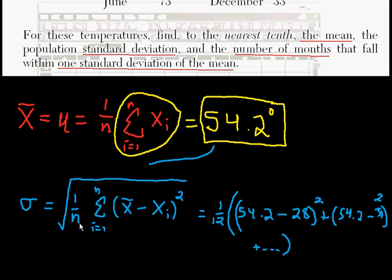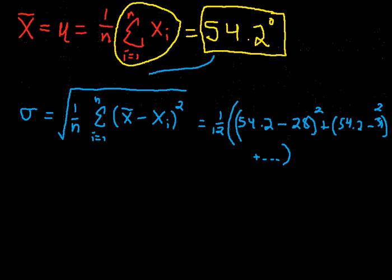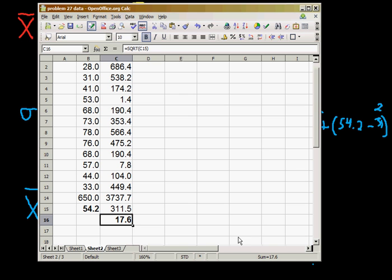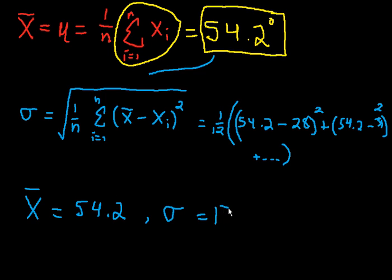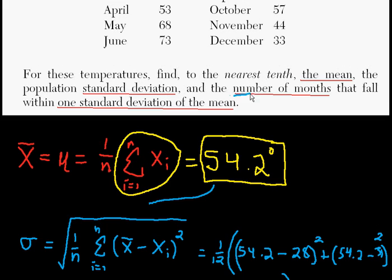So I know the mean is 54.2. And I know the standard deviation now is equal to 17.6. Now what I want to do is, this is the last part of the problem. Now what I want to do is find out the number of months that fall within one standard deviation of the mean.